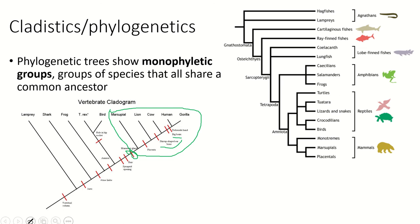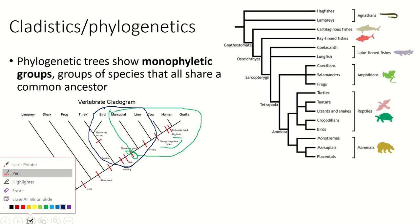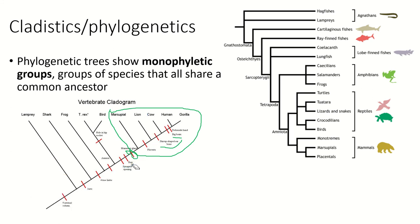If we were to circle the bird, the marsupial, and the lion, that is not a monophyletic group — that is a paraphyletic group. It is not a group of organisms that are all evolutionarily related in that sense, because it is excluding some of the ancestors.